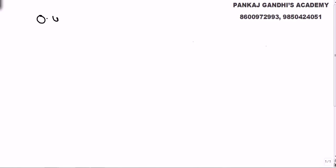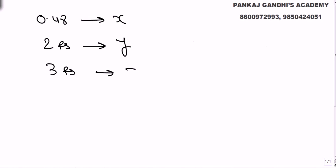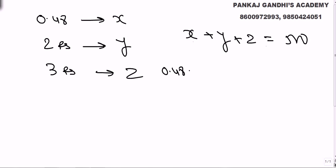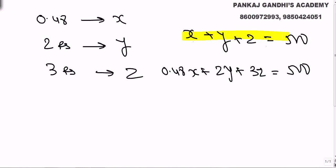The question is: a person bought stamps of 48 paise — let's say he bought x stamps; 2 rupees — he bought y stamps; and 3 rupees — he bought 7 stamps. The total number of stamps is 500 and total amount spent is 0.48x + 2y + 3z = 500. Again the same problem: 3 variables and 2 equations, so as such we cannot solve it directly.